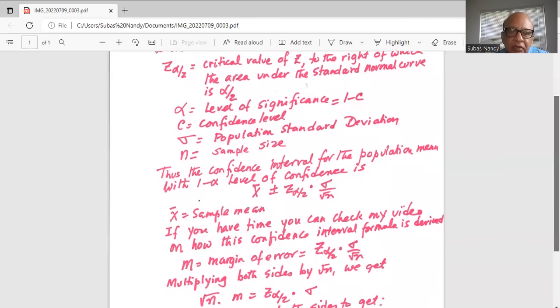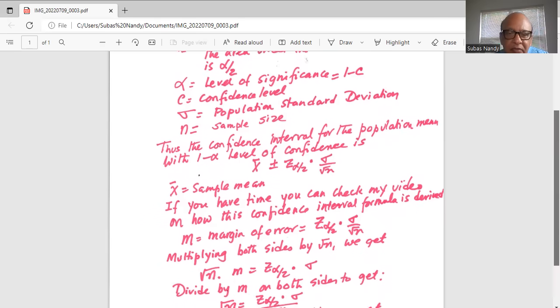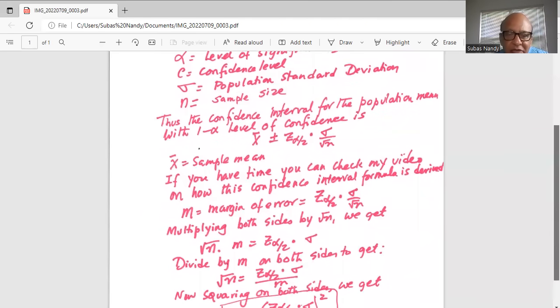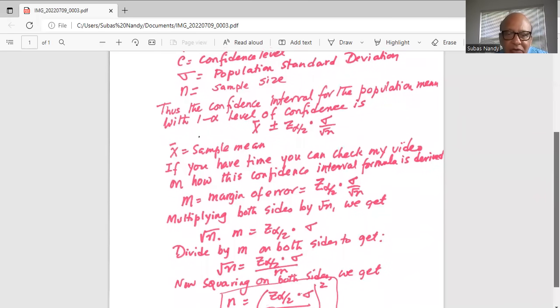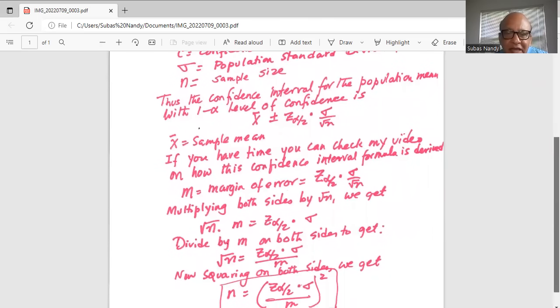So multiplying both sides of this m equation by square root of n, we get square root of n times m is equal to z alpha by 2 multiplied by sigma, because the square root of n in the denominator on the right side of the equation cancels with square root of n which we multiply. Now we'll divide by m on both sides of the equal sign to get square root of n equal to z alpha by 2 multiplied by sigma divided by m. Remember sigma is the population standard deviation.